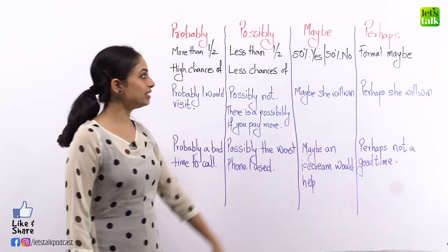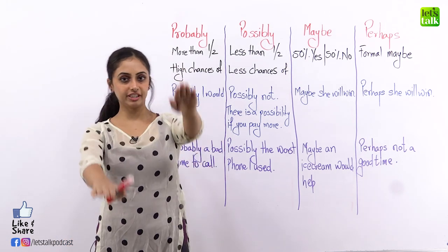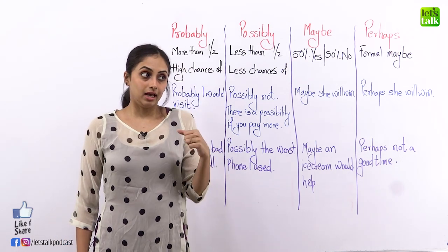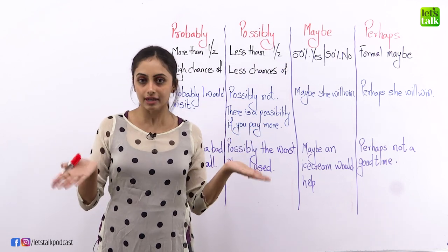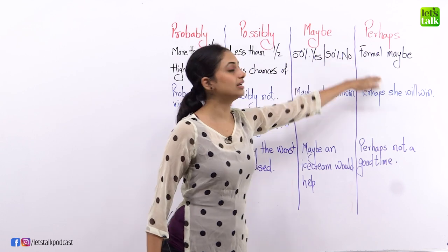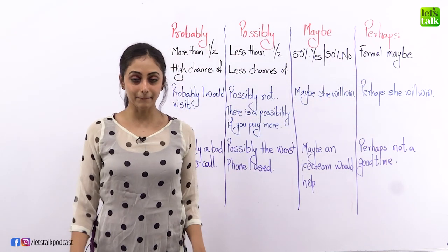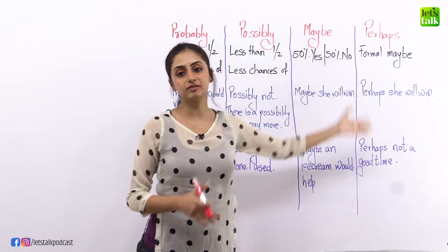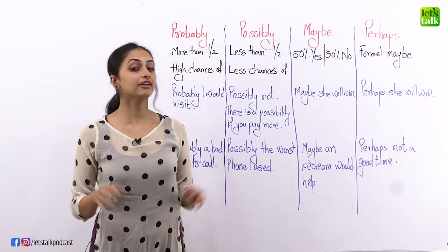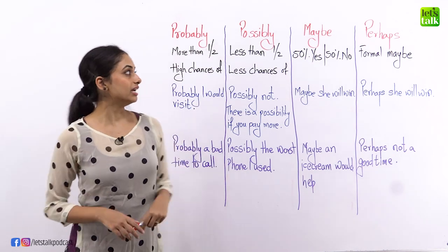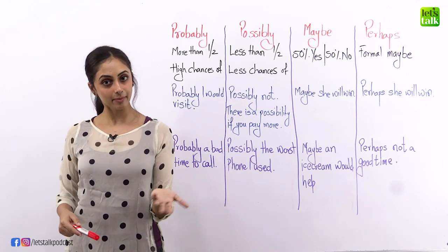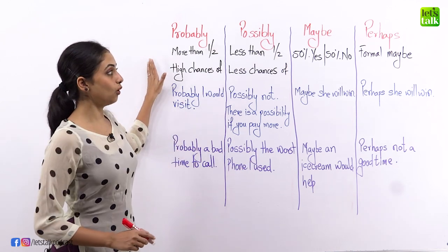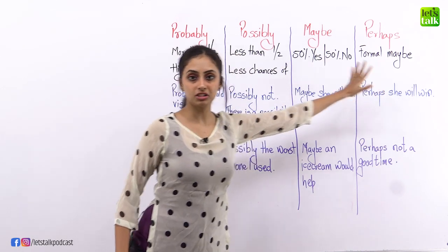Maybe means that there is a 50-50% chance. I may be dieting, I may not be dieting. That is a 50% chance. Then perhaps is nothing but a formal way of saying maybe, and a very fancy way, and if I may say so, a very English or British way of saying maybe.